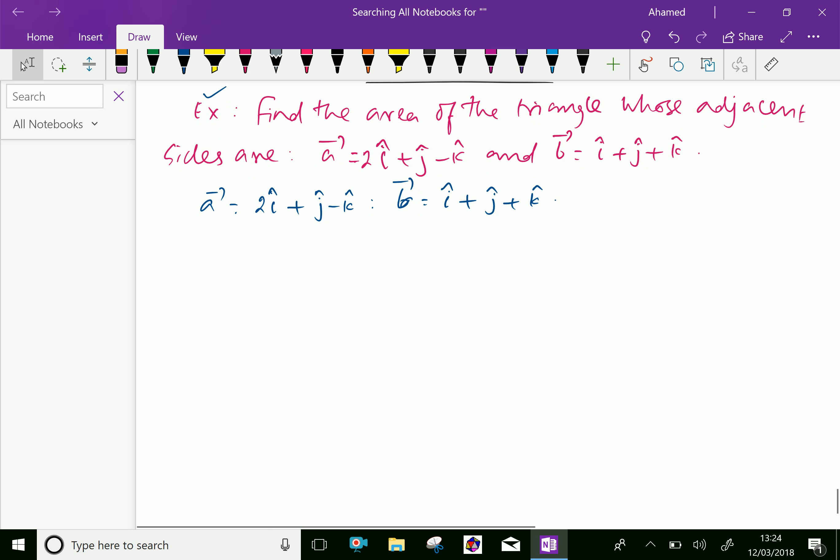Let us find vector a cross vector b using determinant ijk and coefficient of ijk is in vector a is 2, 1, minus 1. For vector b, the coefficient is 1, 1, 1.